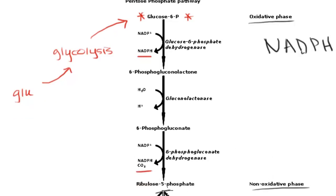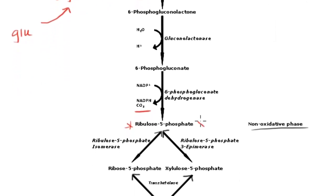The non-oxidative phase starts with this molecule called ribulose 5-phosphate. And it's really not important to know, except for the fact that it sounds like ribose 5-phosphate, right? Which I mentioned before was one of the main primary products of the pentose phosphate pathway. And indeed, it's a precursor for the ribose 5-phosphate. So let's see how that happens.